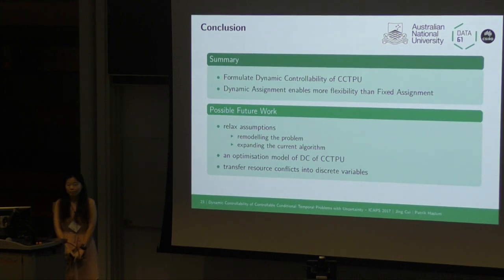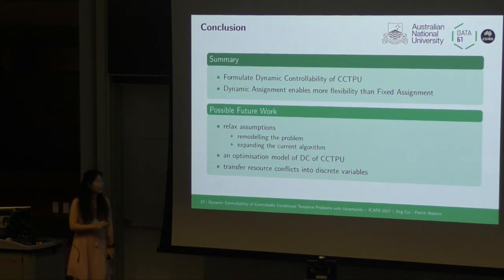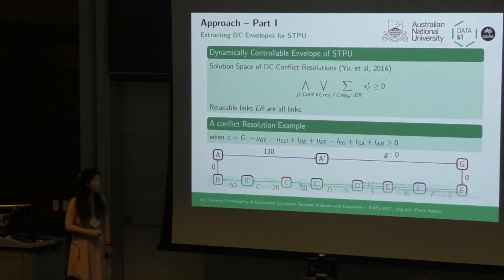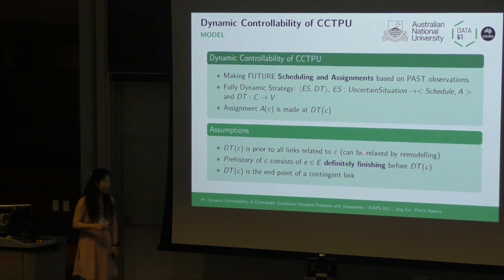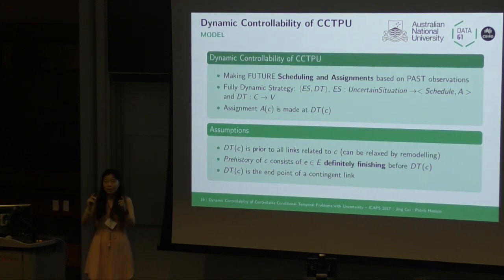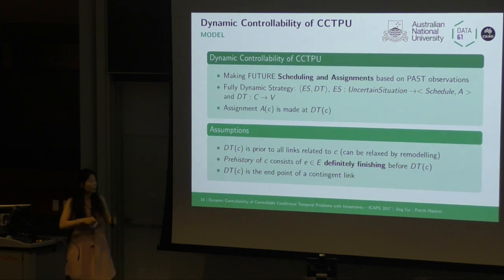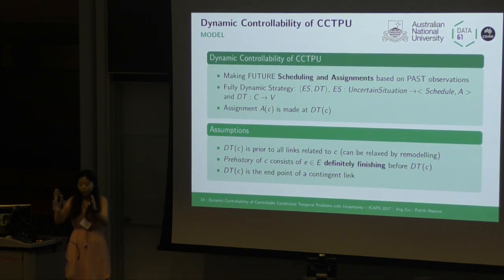Another question asked about relaxing the assumptions. The first assumption — decision time point before all links related to the discrete variable — can be relaxed by remodeling using binary variables, so that we can postpone one assignment into several decisions. The second assumption requires introducing other reduction rules.